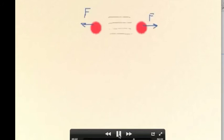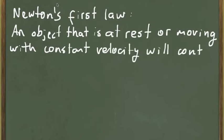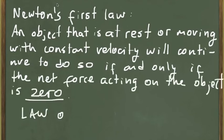Now that we have a better idea of what a force is, it's time to talk about Newton's laws of motion. Newton's first law basically says that an object that is at rest or moving with constant velocity will continue to do so if and only if the net force acting on the object is zero. This is also called the law of inertia.